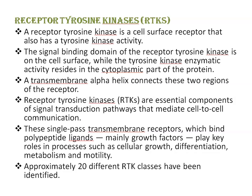Receptor tyrosine kinase is a cell surface receptor that also has tyrosine kinase activity. The signal-binding domain is on the cell surface, while the tyrosine kinase enzymatic activity resides in the cytoplasmic part of the protein. A transmembrane alpha helix connects these two regions. Receptor tyrosine kinases are essential components of signal transduction pathways that mediate cell-to-cell communication, binding polypeptide ligands such as growth factors that play a key role in cellular growth, differentiation, metabolism, and motility. Approximately 20 different RTK classes have been identified.